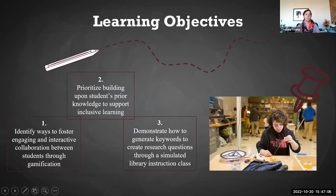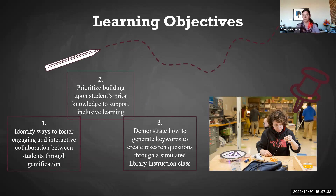We also put in the learning objectives where we show students what we want them to get out of the class. This shows how we're going to structure and frame the class. For example: identify ways to foster engaging and interactive collaboration between students through gamification; prioritize building upon students' prior knowledge to support inclusive learning — this is where those Mentimeters come in, seeing what they know previously, going through the class definition; and demonstrate how to generate keywords to create research questions through a simulated library instruction class.